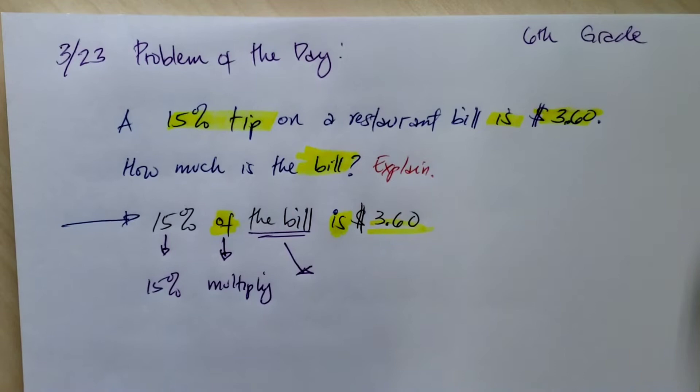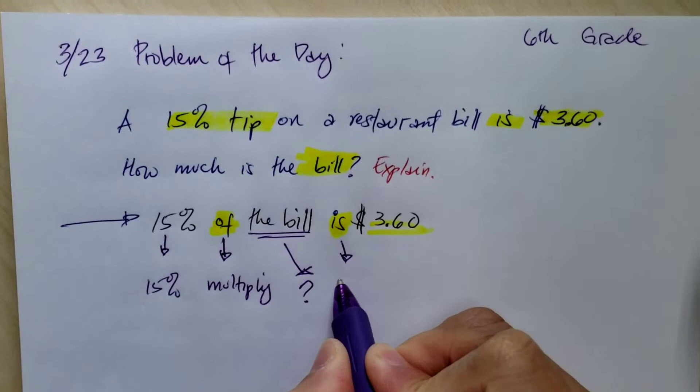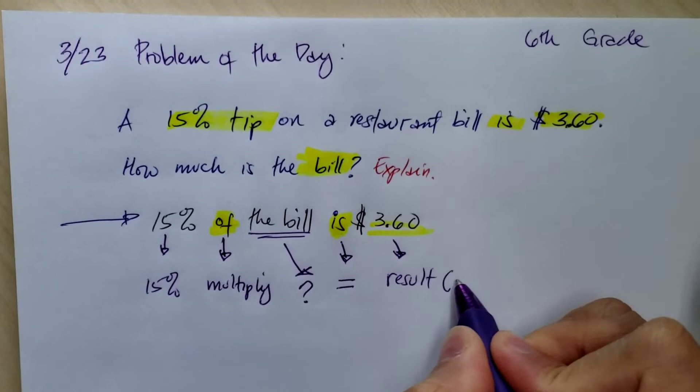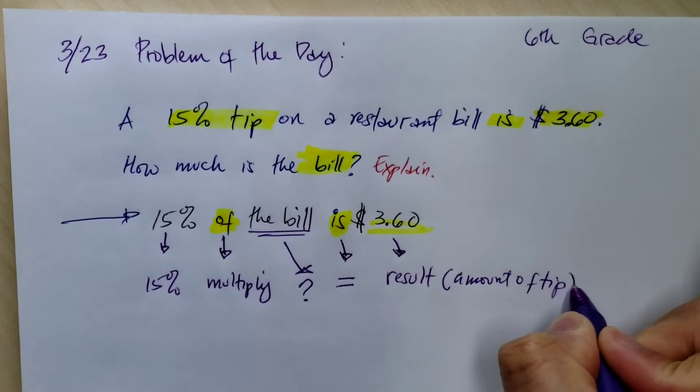Do we know how much the bill is? That is a question mark that we do not know. Is for this case means equal. And this is the result, which is the amount of tip.